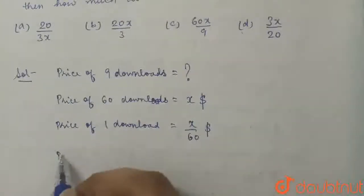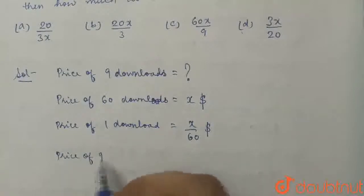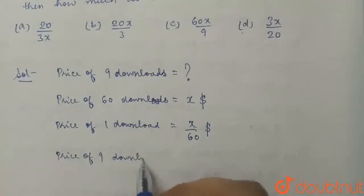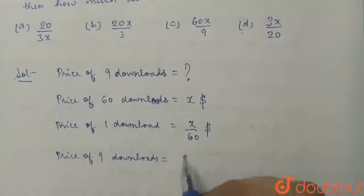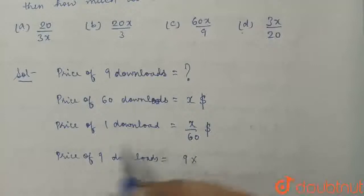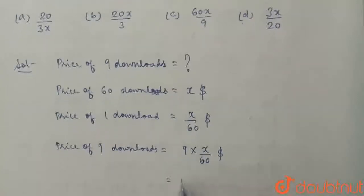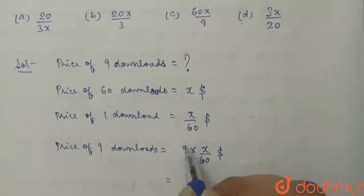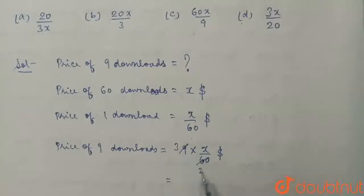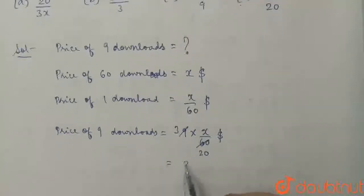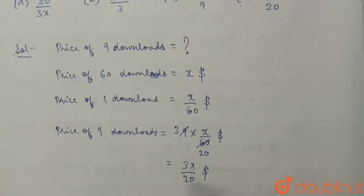So the price of 9 downloads will be 9 multiplied by the price of 1 download, that is X upon 60 dollars. On dividing by 3, we get 3 over 20. So this becomes 3X upon 20 dollars. The price of 9 downloads is 3X upon 20.